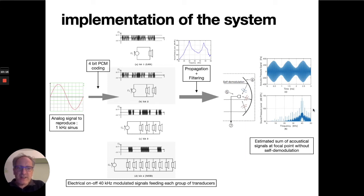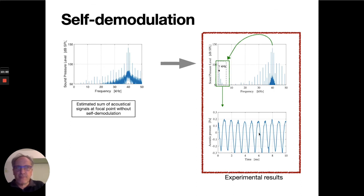The frequency content is centered around the carrier and the two sidebands, but it also contains many parasitic components mainly due to the 4-bit quantization. However, there is no energy in the low frequency range due to the filtering performed by the transducers themselves.